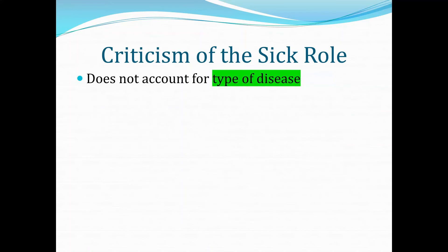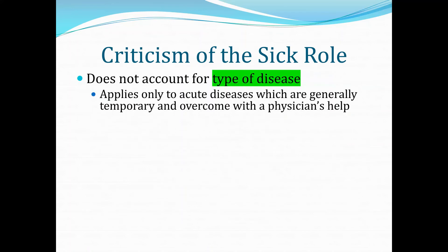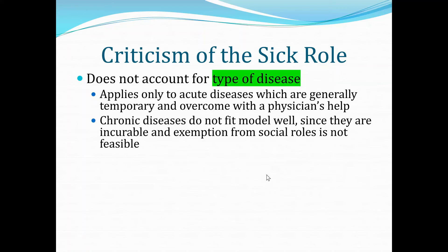Criticism number two: it does not account for the type of disease. Sick role theory only applies to acute disease, which are generally temporary and overcome with the physician's help. Chronic diseases do not fit the model very well, since they are incurable and an exemption from social roles is not feasible long-term.